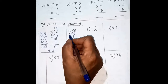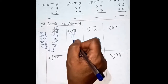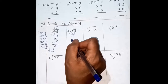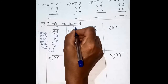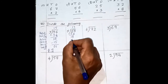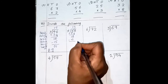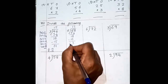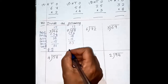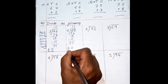Read the table of 5: 5 ones are 5, 5 twos are 10, 5 threes are 15, 5 fours are 20. 4 times we cannot take, so we are taking 3 times — 5 threes are 15. 8 minus 5 is 3, 1 minus 1 is 0. So this is your quotient. Quotient is 13 and the remainder is 3.